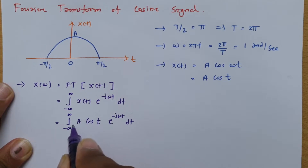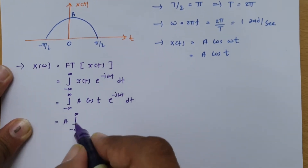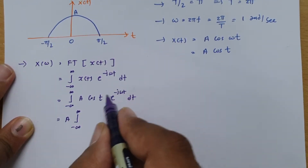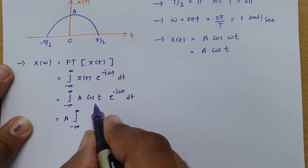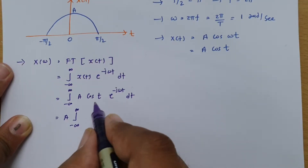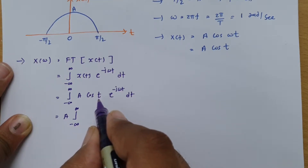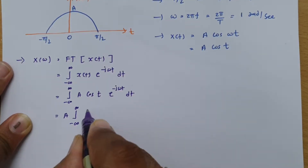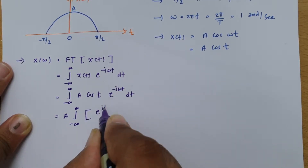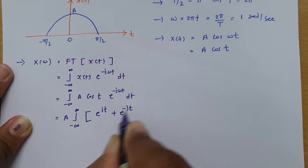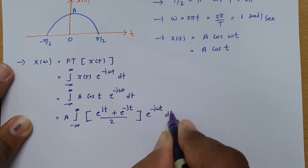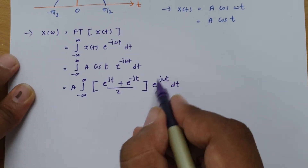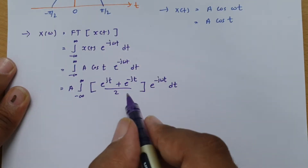Here, A is a constant so it can be taken outside the integral. Now I can represent the cosine function in terms of exponentials: cos(t) = [e^(jt) + e^(−jt)] / 2. So we write [e^(jt) + e^(−jt)] / 2 multiplied by e^(−jωt) dt, giving us a total exponential expression that we can then integrate.